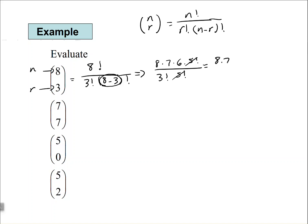That allows us to cancel the 5 factorials. Now we have 8 times 7 times 6 in the numerator, and 3 factorial — which is 3 times 2 times 1, equal to 6 — in the denominator. The 6 cancels with 6, leaving 8 times 7, which equals 56. And that's how you evaluate the binomial coefficient.